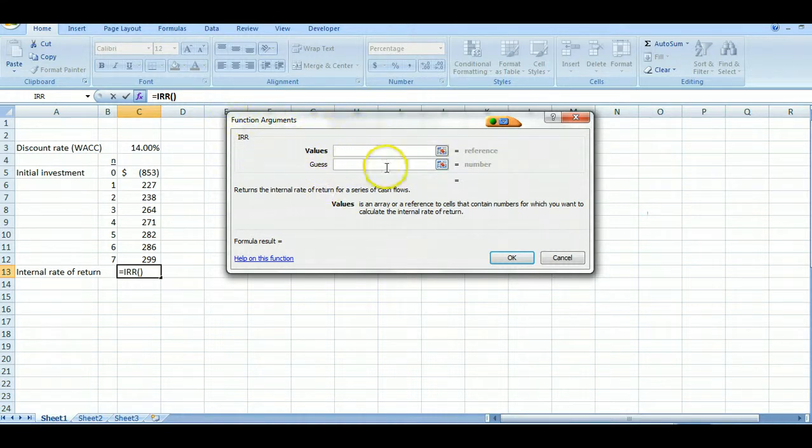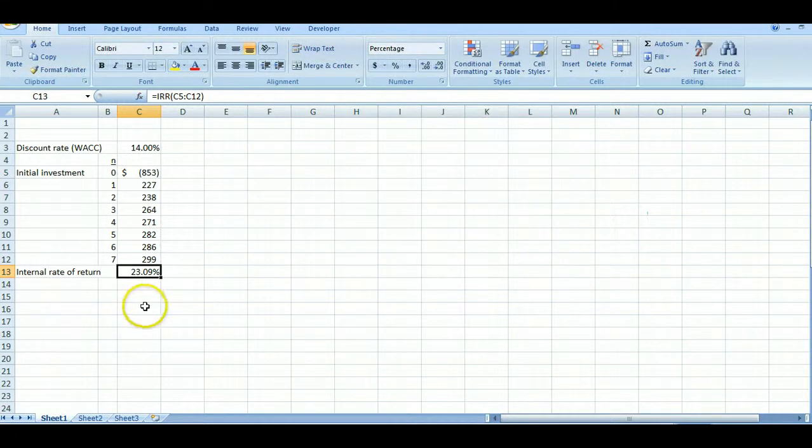It tells you what it is and simply where it says values you highlight the values you want to include in here which is the values for period 0 through 7 and it gives the cell addresses C5 through C12 here and it puts the numbers out to the right exactly like what you have here. And then it gives you a fractional value here of 0.230893817 or a percentage rate which is your internal rate of return which is 23.09% in this case. You click OK and that inserts it in your cell.